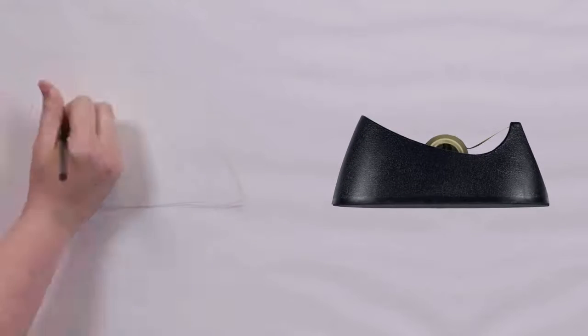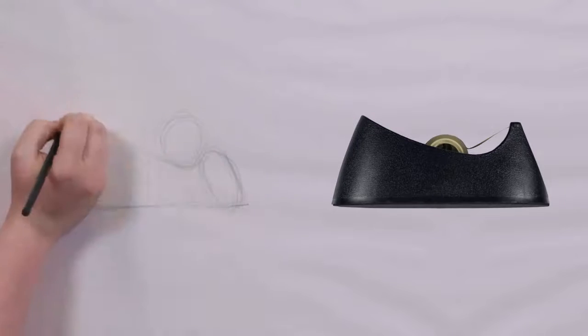An object that seems complex at first can be broken down into easier to understand lines and shapes, such as rectangles and circles. This tape dispenser has complex curves and angles that can be broken down into simple straight lines and concentric circles. The sketch may appear messy at this point, but that's okay.